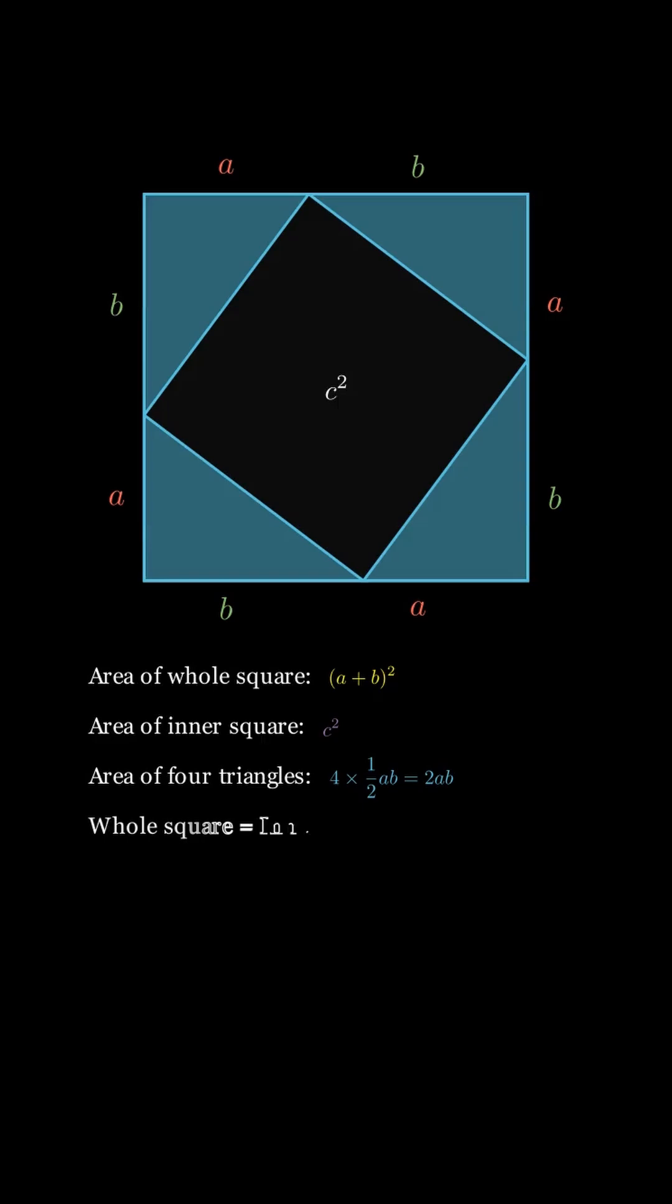We know that the whole square is the inner square plus the four triangles, so a plus b whole squared equals c squared plus 2ab.